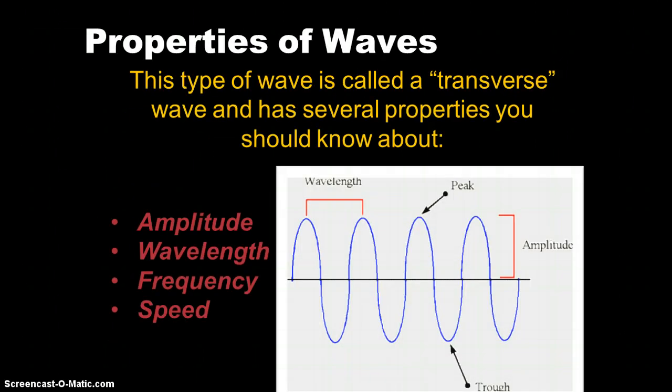So let's talk about a few properties here. The waves that we're talking about are called a transverse wave. And they have a property that's amplitude, wavelength, frequency, and speed. So let's talk about those one by one.